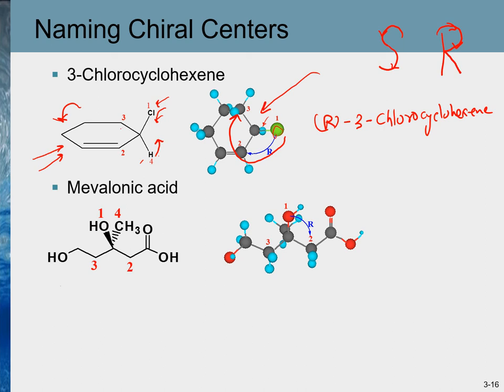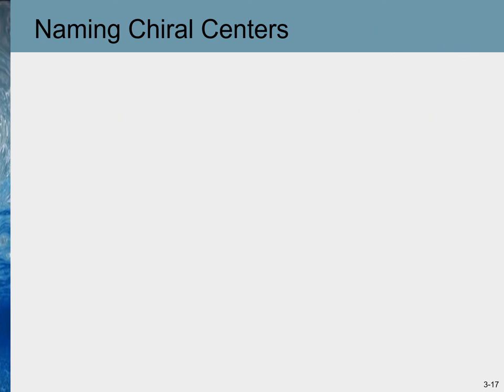In another example, priority number 4 is already away from us, and going from 1 to 2 to 3 is again clockwise — so this molecule is also R. It is named R-mevalonic acid.